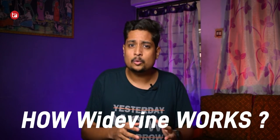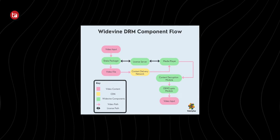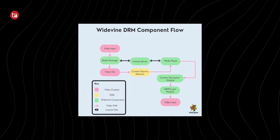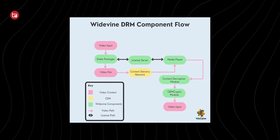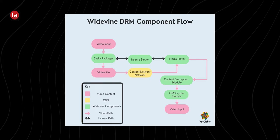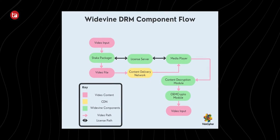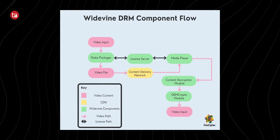Widevine has three types of security levels: L1, L2, and L3. Widevine works in three steps: first, encryption of the video and sending the data to the user trying to stream it; second, the user decrypts the encrypted file sent from the OTT platform's server; and third, license verification of the user and decryption and processing of that particular video. These are the three core processes when Widevine is in use.